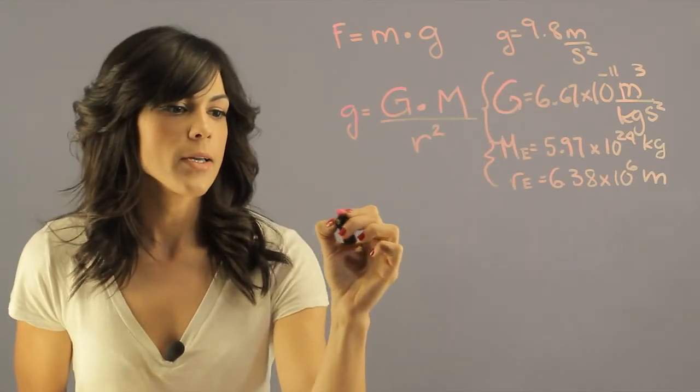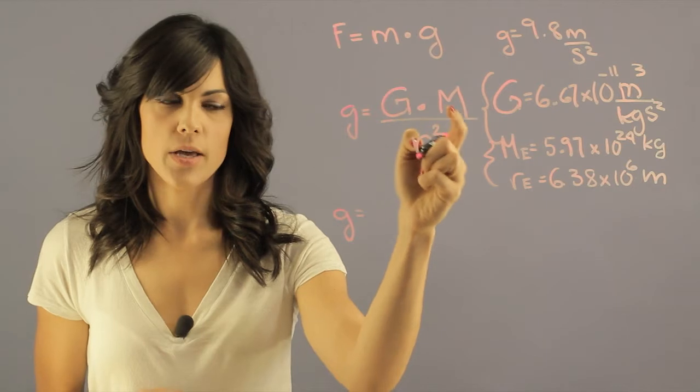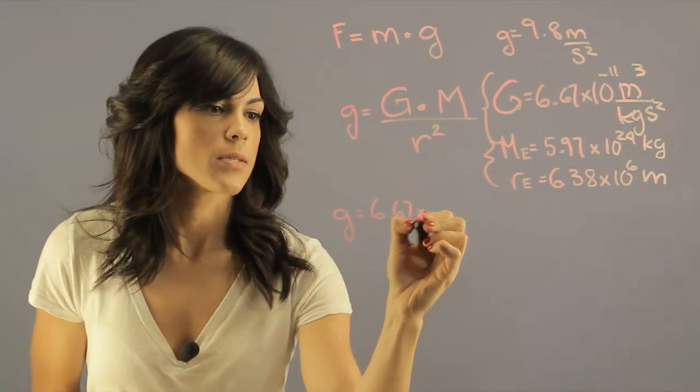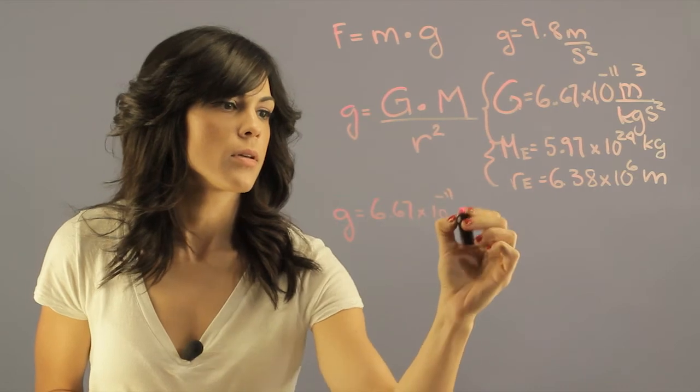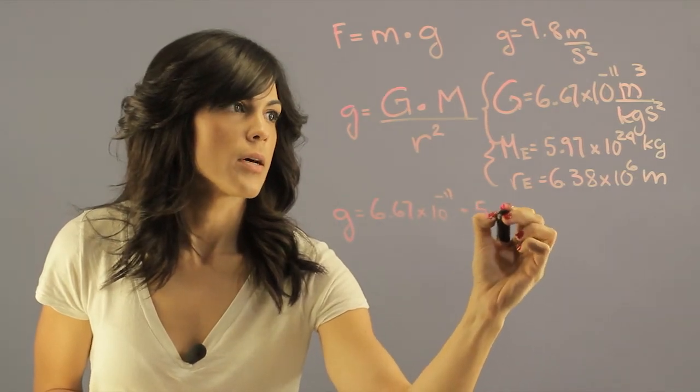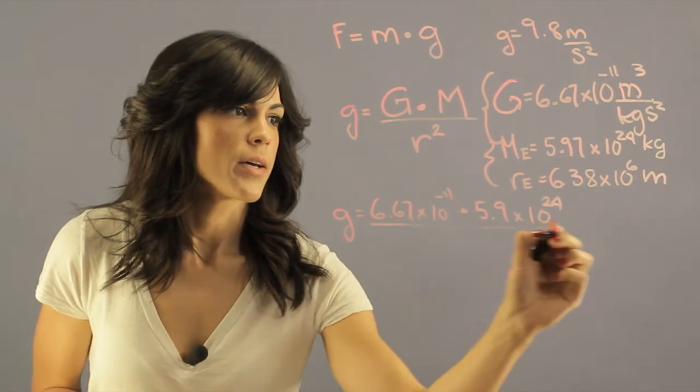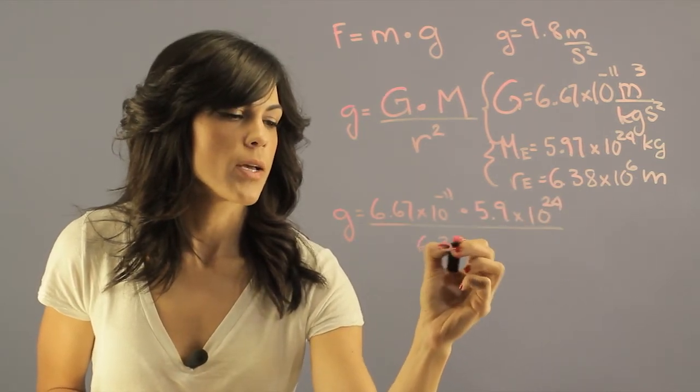If we plug in all these values for g, m, and r, we end up with 6.67 times 10 to the minus 11 times 5.9 times 10 to the 24th divided by 6.38 times 10 to the 6 squared.